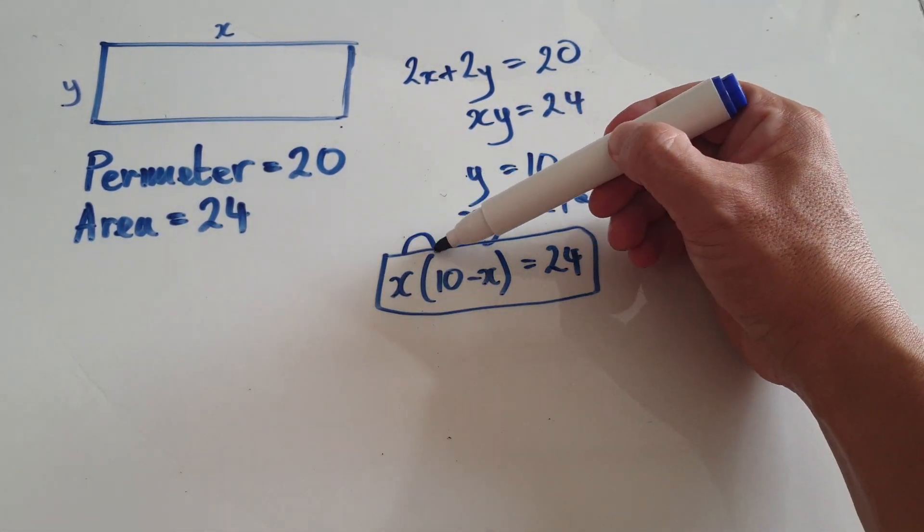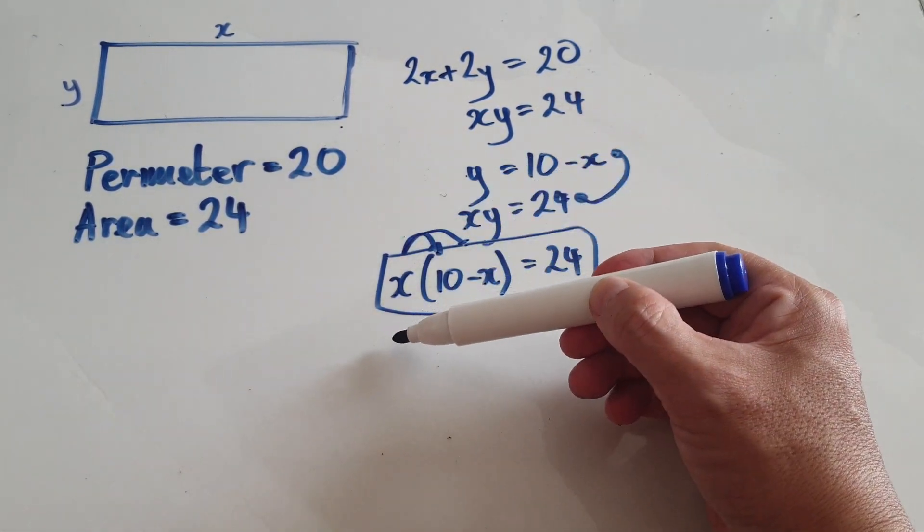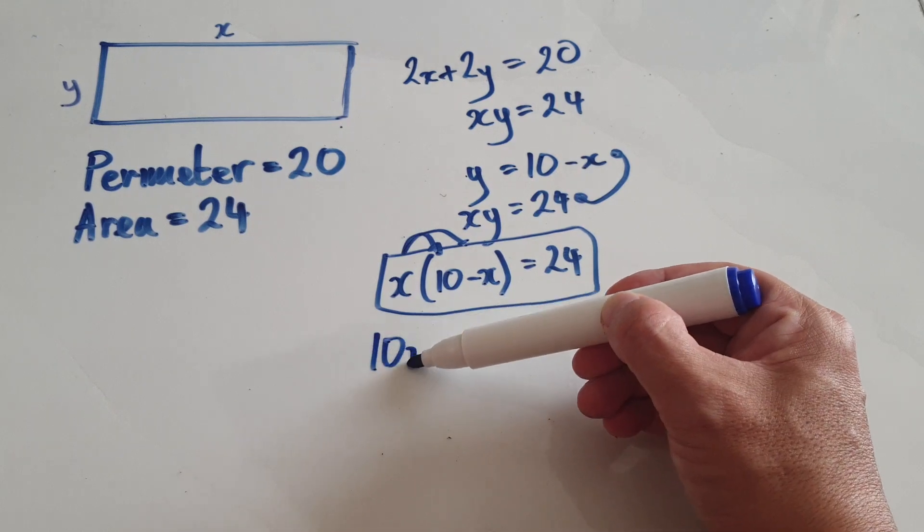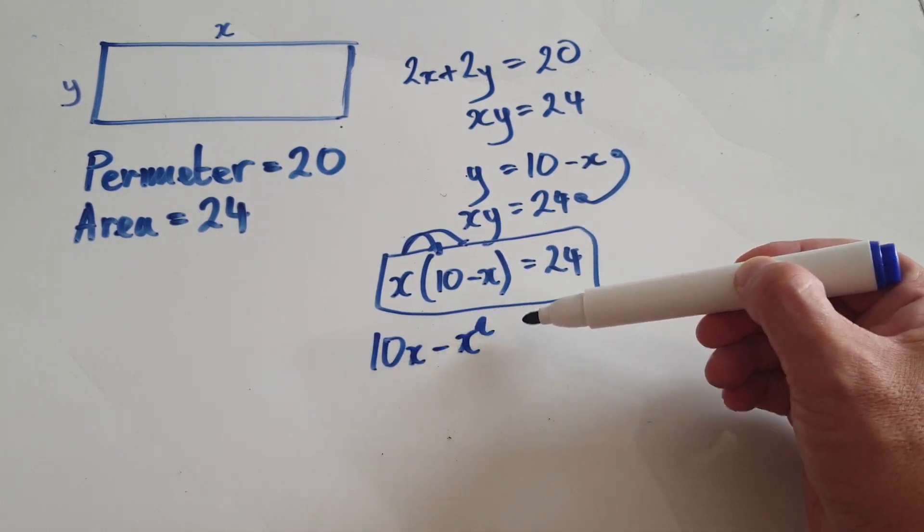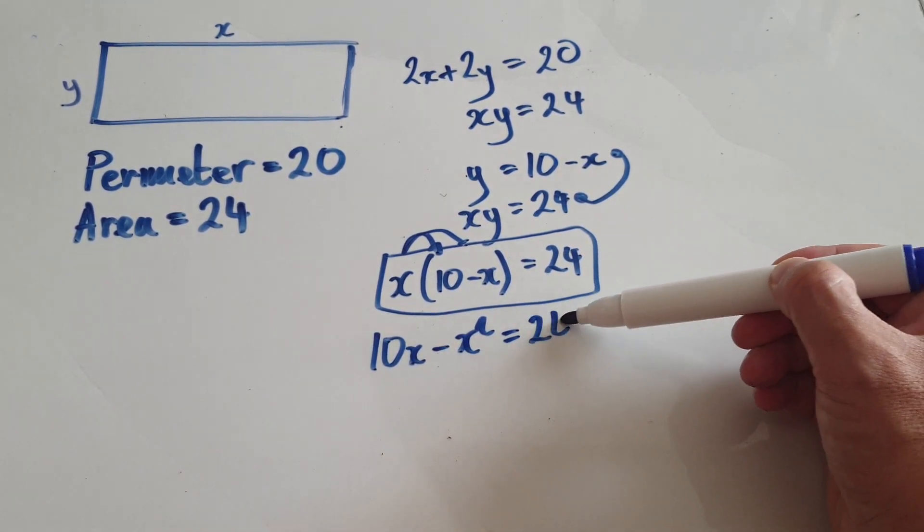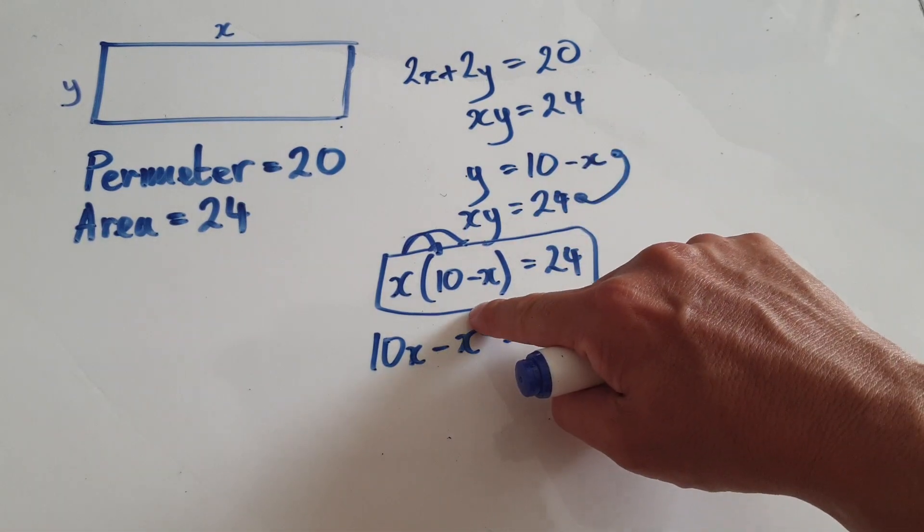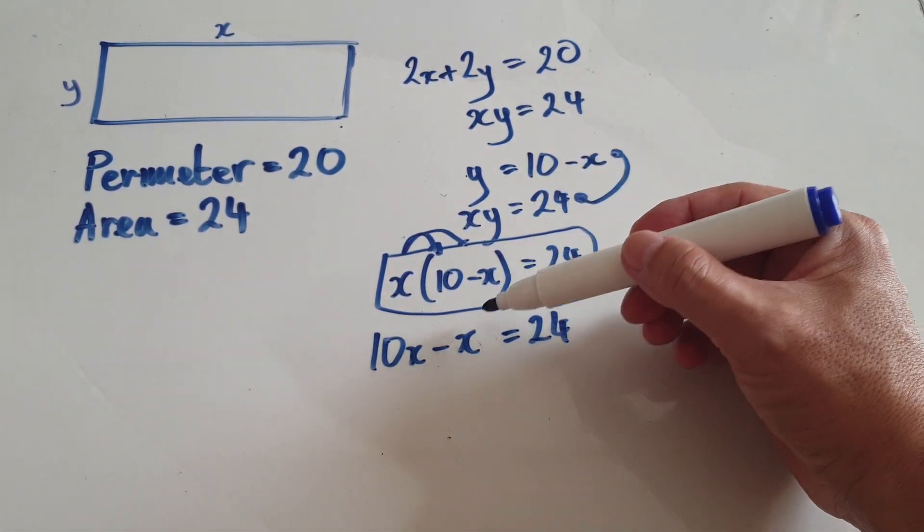So let's multiply this out. That would be 10x take away x squared equals 24. So now we can see that this is a quadratic equation problem because you've got x squared, x, and 24.